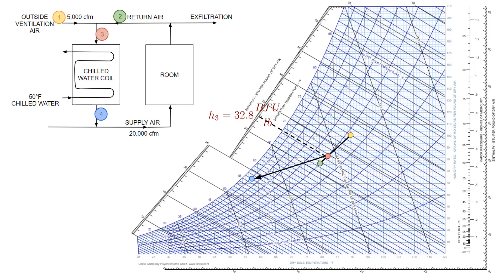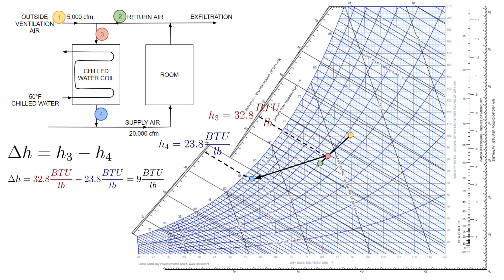Then we can draw a line from state three — the air entering the coil — to state four in blue, which is the air leaving the coil. State four is located based on the leaving coil conditions: 58 degrees dry bulb and 56 degrees wet bulb. As expected, it's down and to the left for latent cooling and sensible cooling respectively. You can then read off the enthalpy at state four, which is 23.8 BTU per pound. To find the refrigeration load, we're interested in the difference in enthalpy across the coil — delta H equals H3 minus H4 — which gives a difference of 9 BTU per pound across the coil.